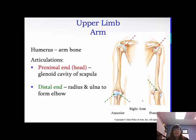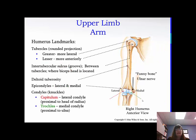The humerus is the arm bone. The proximal end, or the head, articulates with the glenoid cavity of the scapula, and the distal end articulates with the radius and the ulna to form the elbow. Landmarks: the tubercles — you have the greater, which is more lateral, and the lesser, which is more anterior. Those are rounded projections. The intertubercular sulcus is the groove between these two tubercles, and that's where the biceps head is located.